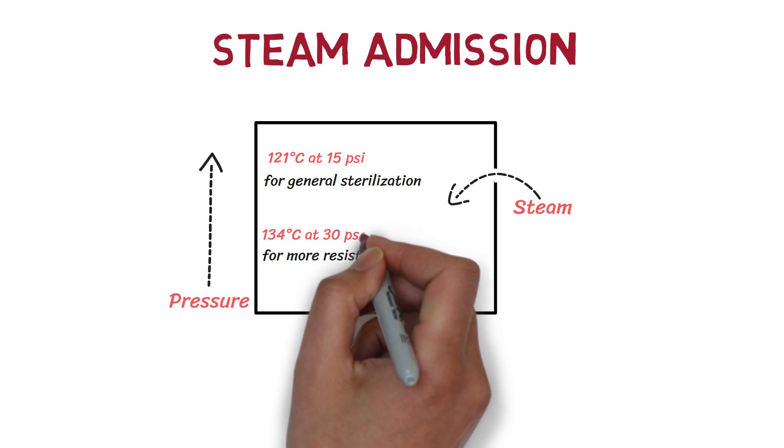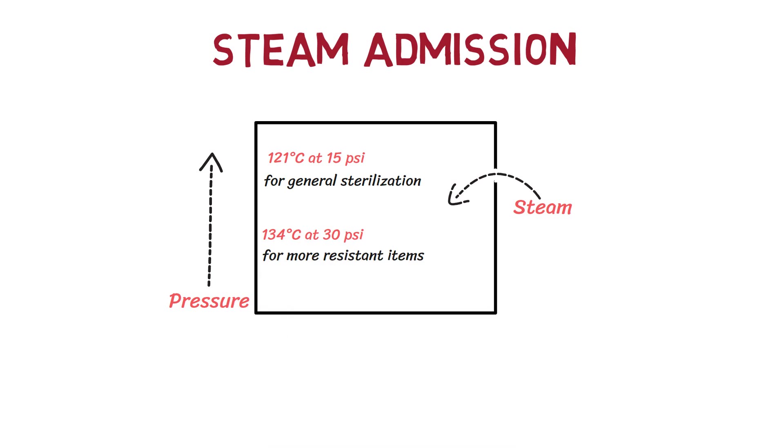134 degrees Celsius at 30 psi is applied. The steam condenses on the surface of items and rapidly raises the temperature of the items.